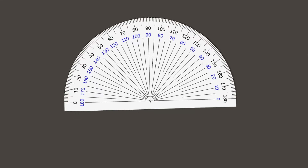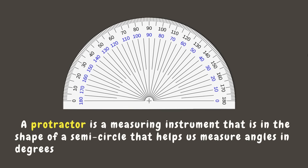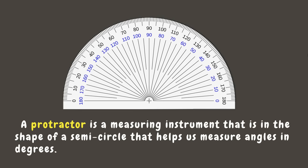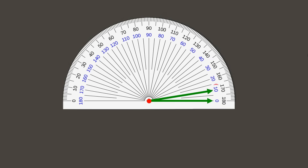The best way to measure an angle is by using a protractor. A protractor is a measuring instrument in the shape of a semicircle that helps us measure angles in degrees. It has degrees marked clockwise from zero degrees to 180 degrees in the outer scale, and counterclockwise from zero degrees to 180 degrees in the inner scale. For example, this angle measures 10 degrees.